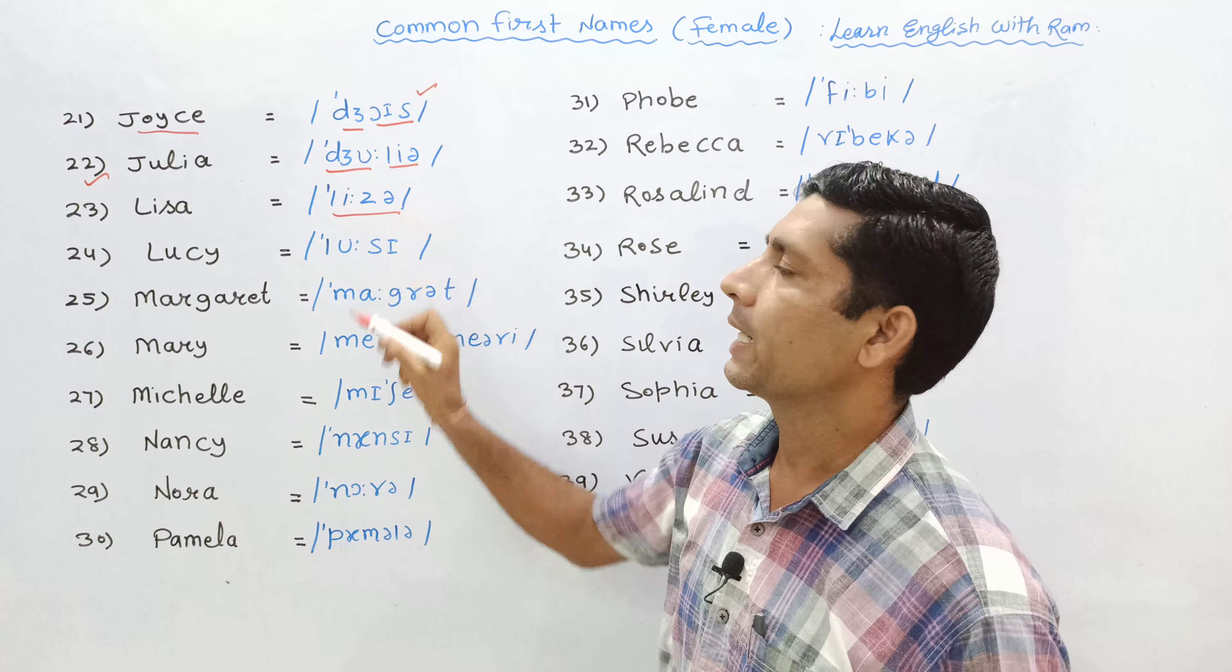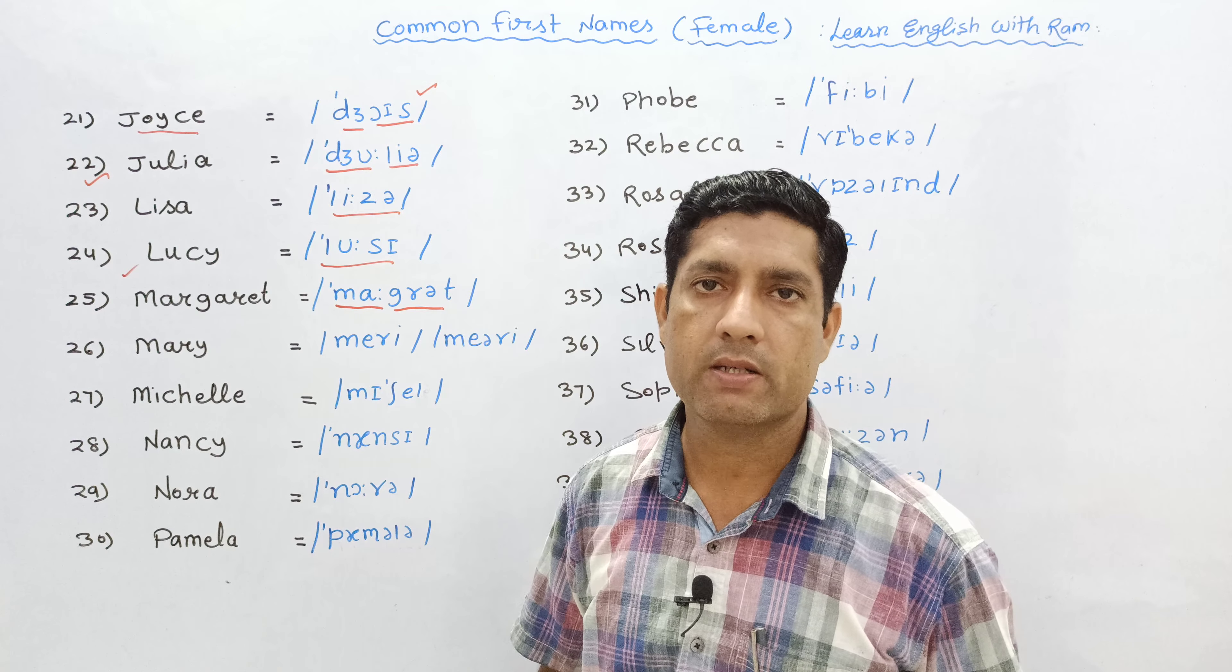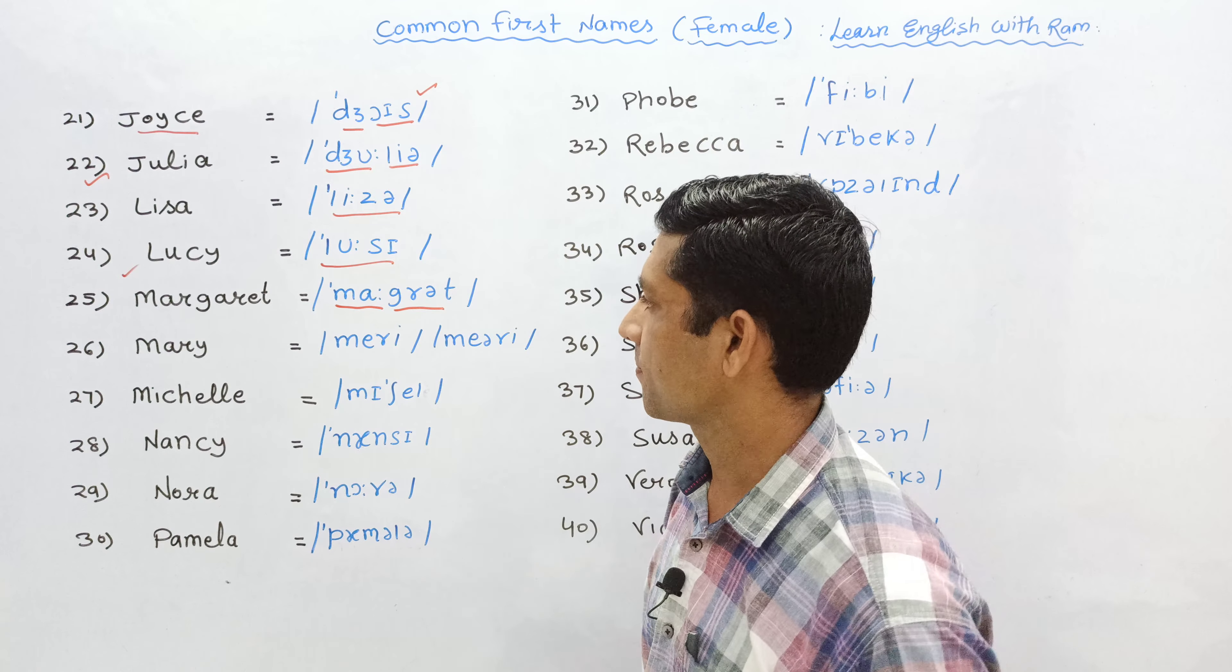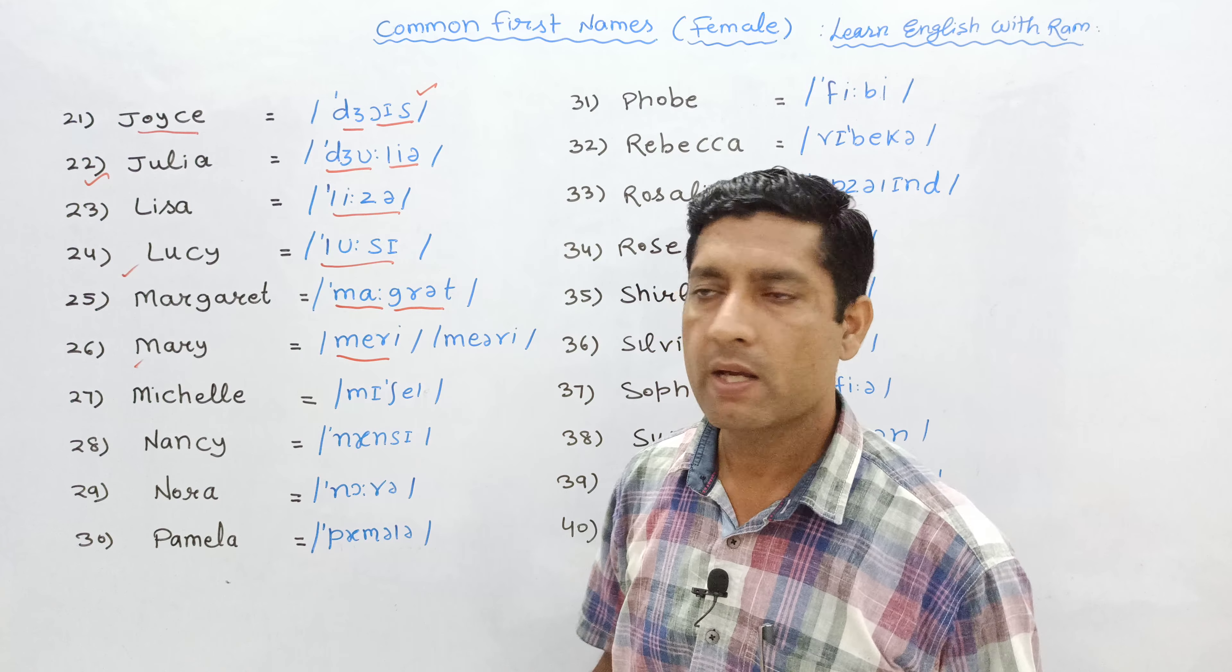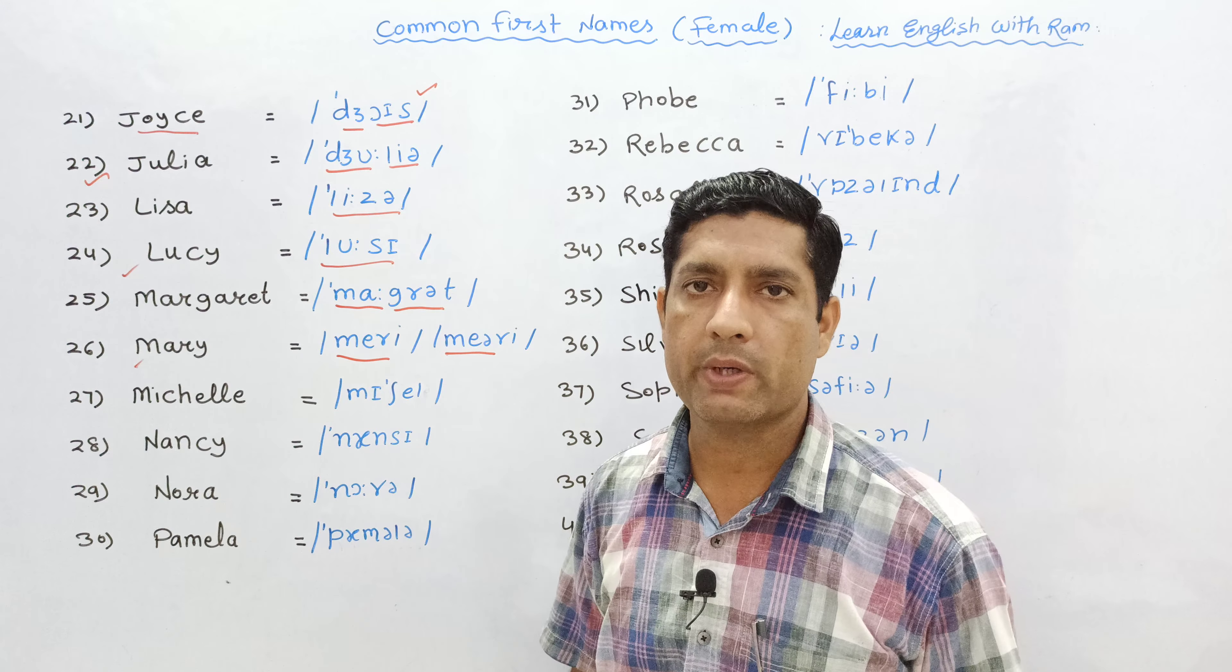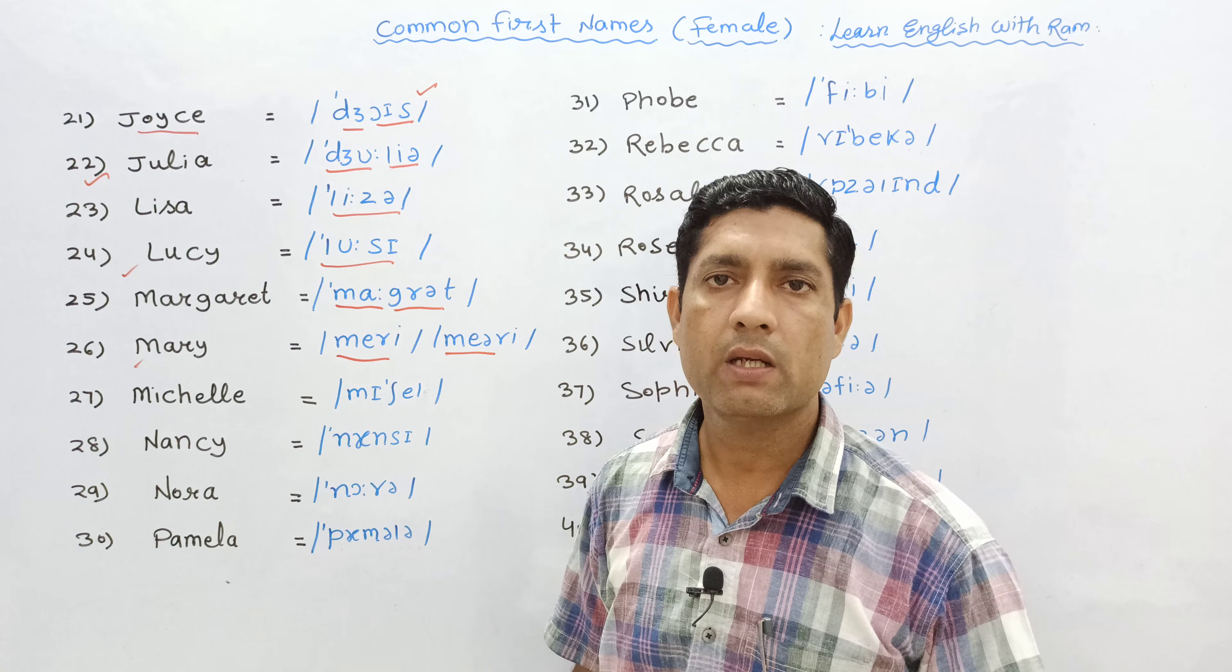24th is Lucy. 25th is Margaret. 26th is Mary and Miri, both are correct.